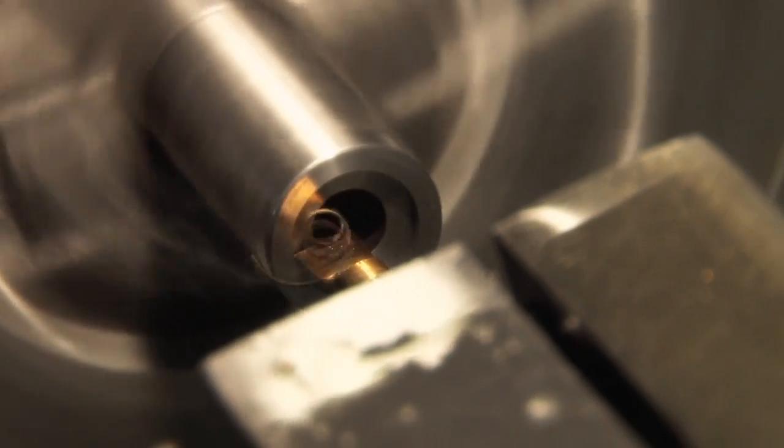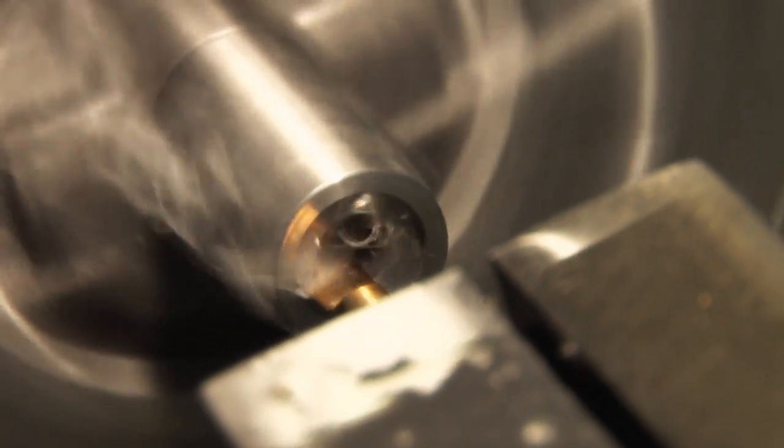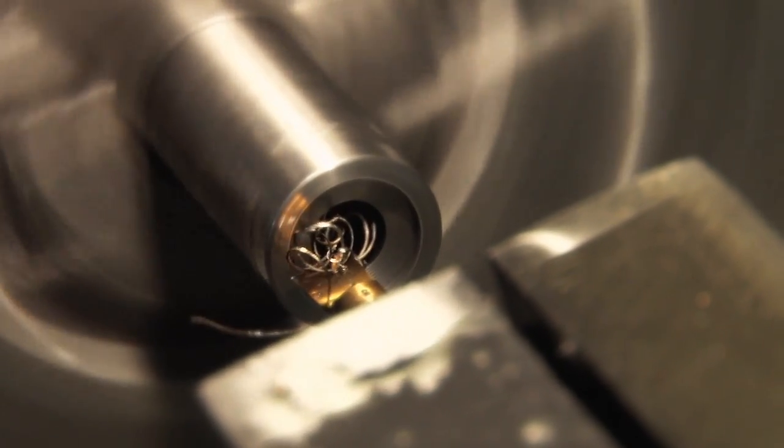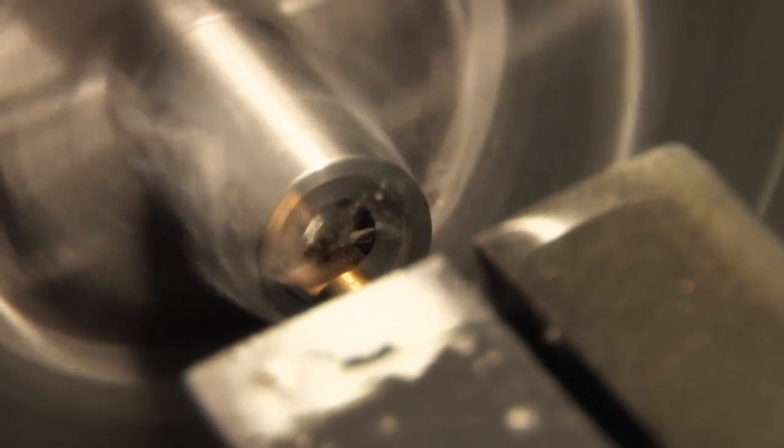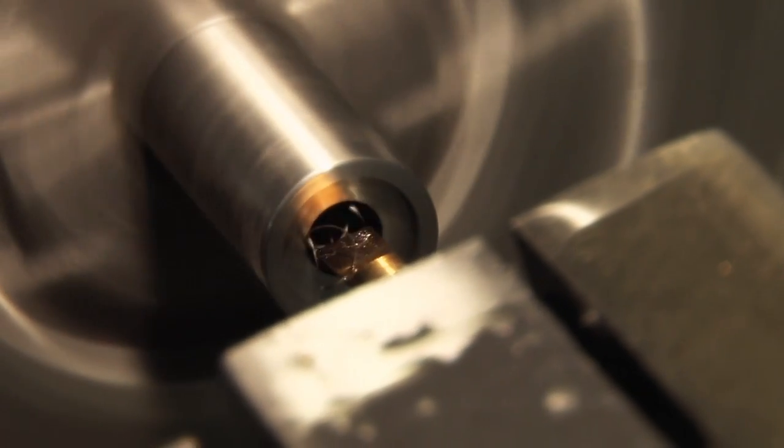The boring bar cuts the 11 degree target crown in a small recess. The CNC program allows precise control of the depth of the recess and the angle of the crown.